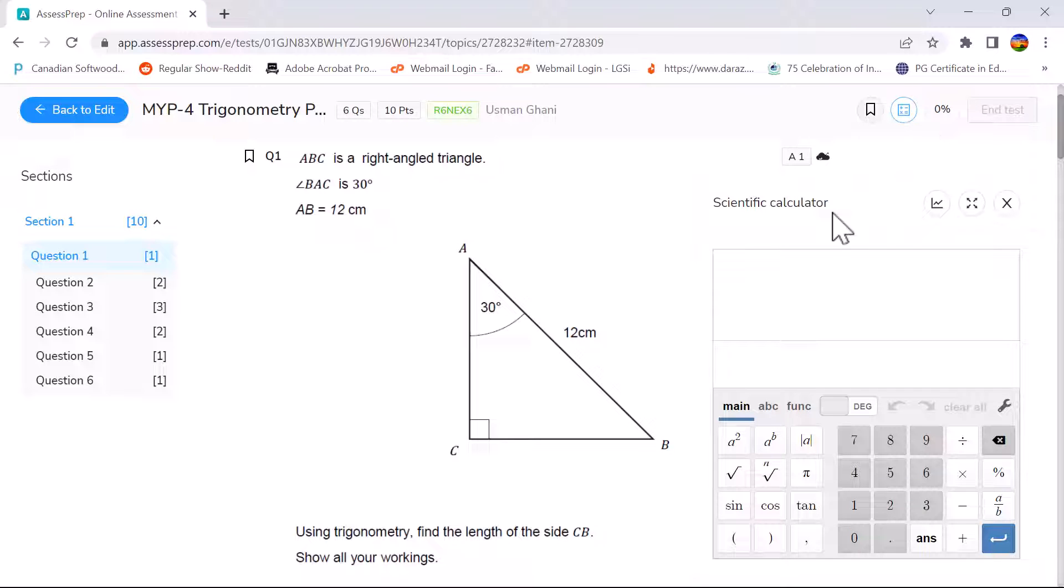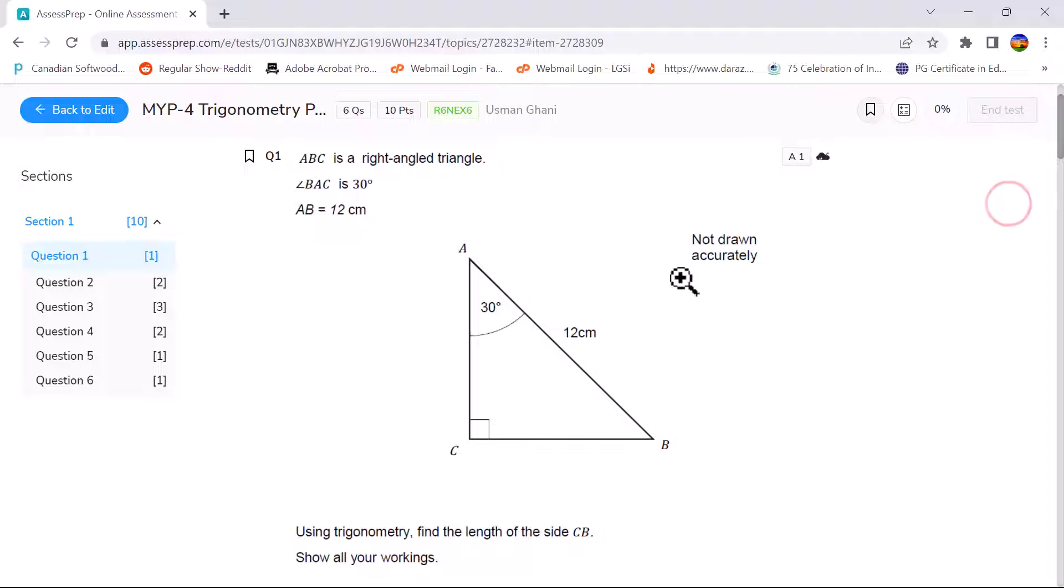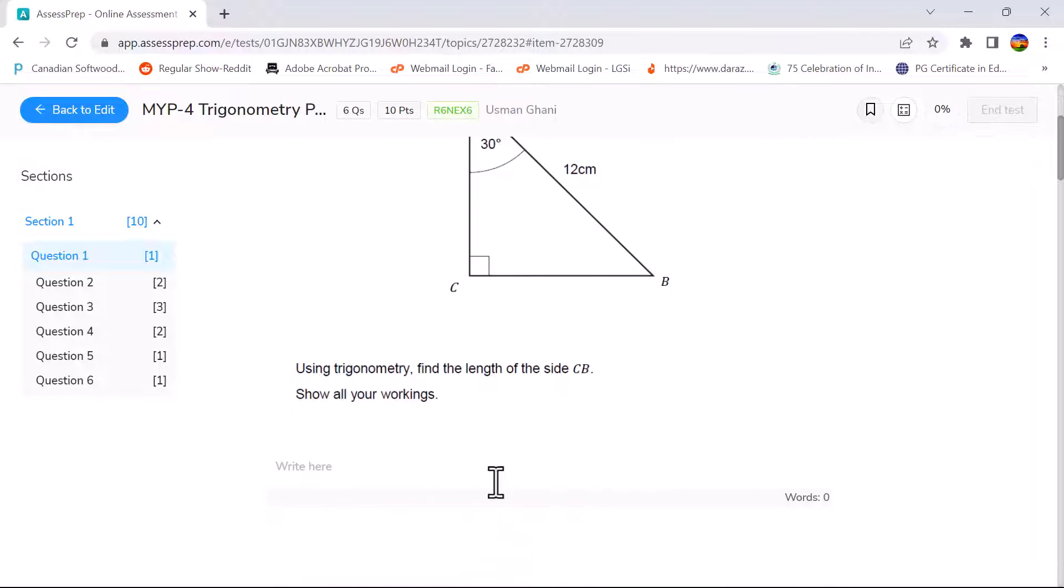So let's dive into the question that we have. ABC is a right angle triangle, angle BAC is 30 degrees and AB is 12 which is shown in the diagram below. Using trigonometry, find the length of the side CB showing all your working.